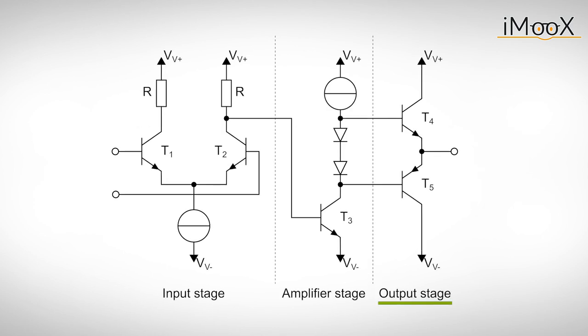The output stage allows the operational amplifier to source and sink large currents at its output while maintaining its output voltage.